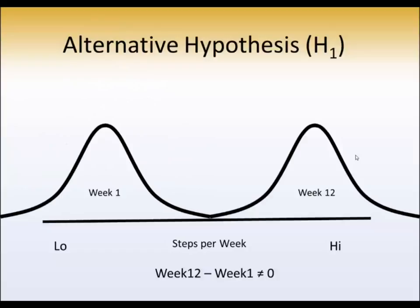So in this case, the mean difference would not be zero. We could take this dependent or correlated t-test and turn it into a one-sample test by determining what the mean difference is between week 1 and week 12, and testing whether that mean difference is significantly different from zero.